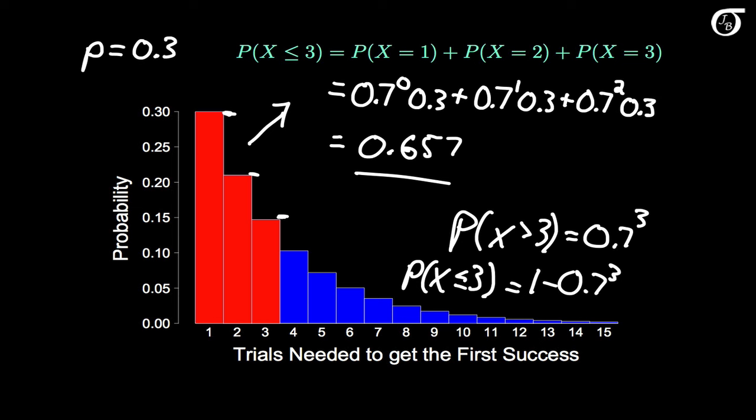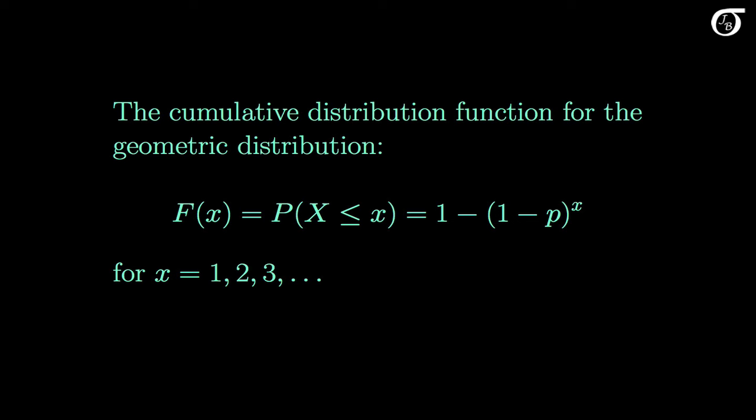We just worked out, using basic logic and probability rules, the cumulative distribution function for the geometric distribution. Written more formally: the CDF, often represented by capital F, is the probability that the random variable X takes on a value less than or equal to little x. For the geometric distribution this works out to 1 minus (1-p)^x, for whole number values of x that are at least 1. We could show this more formally using a mathematical argument based on a geometric series. And that's a brief introduction to the geometric distribution.